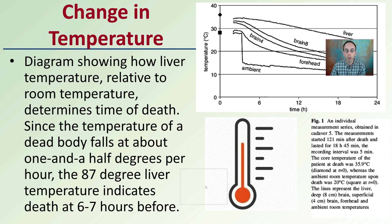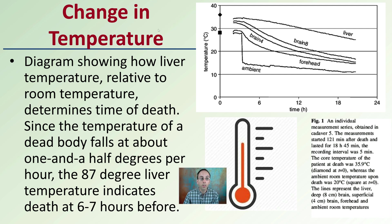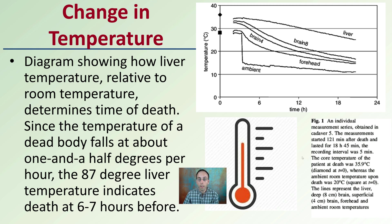That change in temperature is shown in a diagram where the liver temperature relative to the room determines the time of death. The ambient, or room temperature, shows a very sharp decrease. We notice that the brain temperature, the forehead, and the liver are the slowest to progress in that downward trend. Since the temperature of a dead body falls at about one and a half degrees per hour, an 87-degree liver temperature indicates the time of death was about six to seven hours before. The liver, because it is so interior to the body, is the most resistant or slowest to change in temperature.